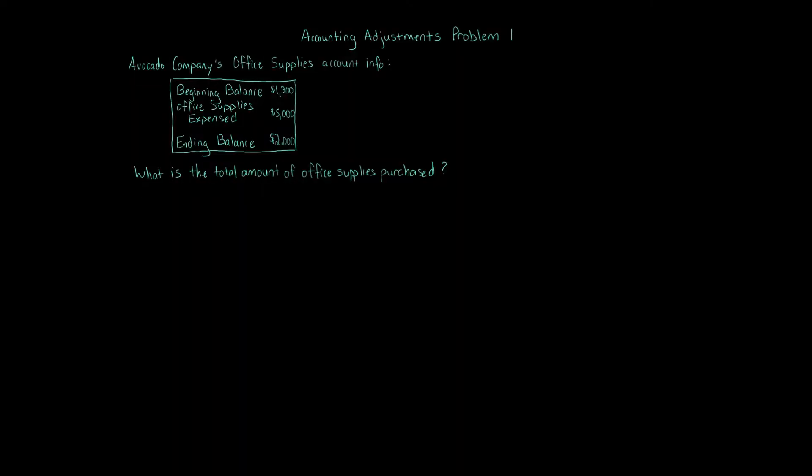Accounting adjustments problem one. Avocado Company's office supplies account info is as follows: beginning balance $1,300, office supplies expense $5,000, ending balance $2,000. What is the total amount of office supplies purchased?